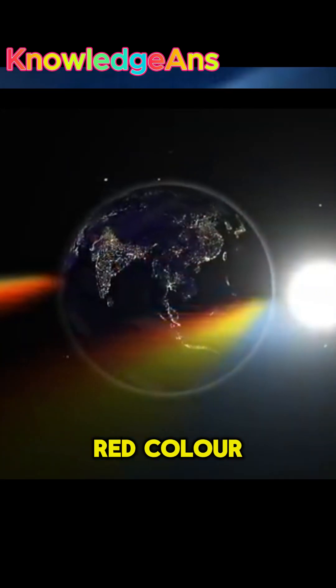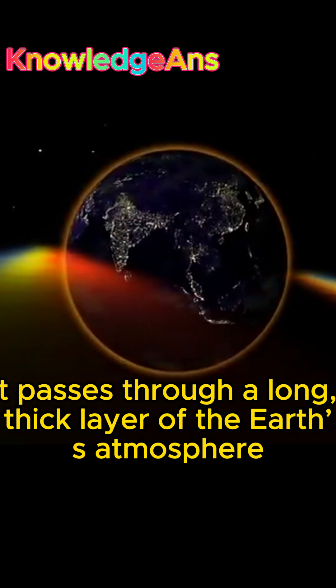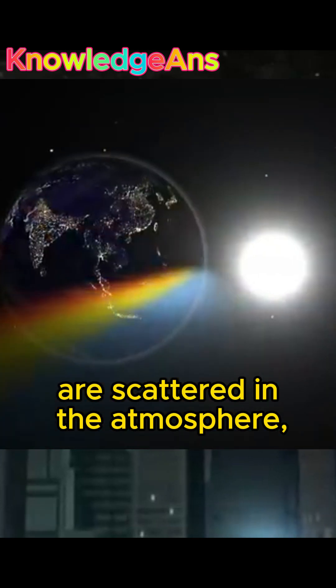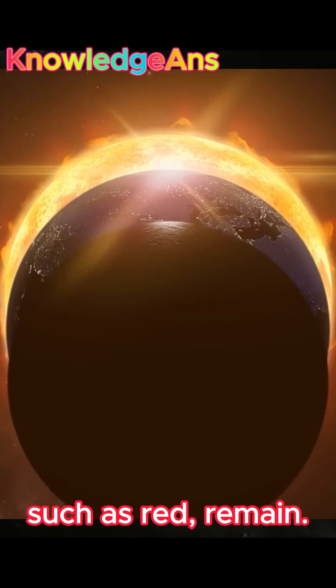The reason for its red color is that when sunlight passes next to the Earth, it passes through a long, thick layer of the Earth's atmosphere. Shorter wavelengths of sunlight, such as blue, are scattered in the atmosphere, so by the time the light has finished its journey to the Moon, more of the longer wavelengths, such as red, remain.